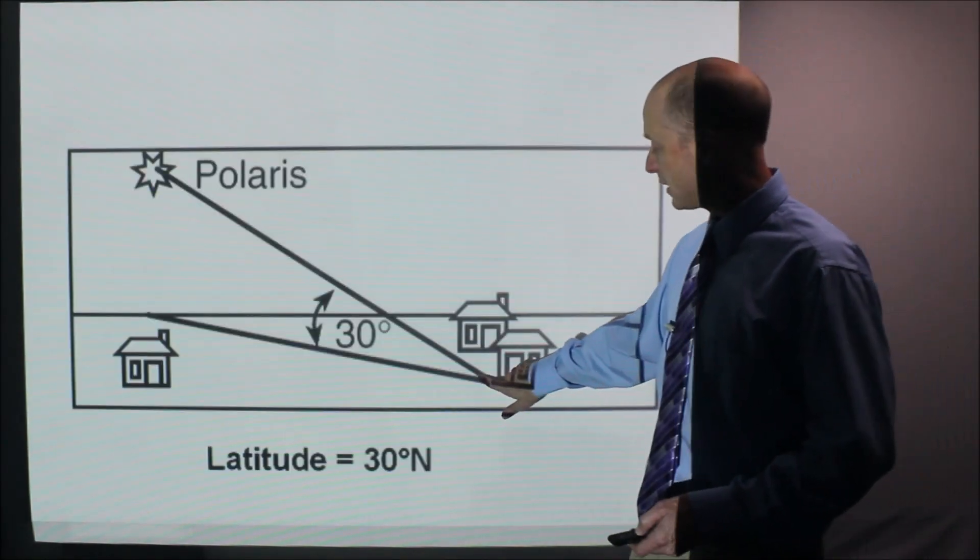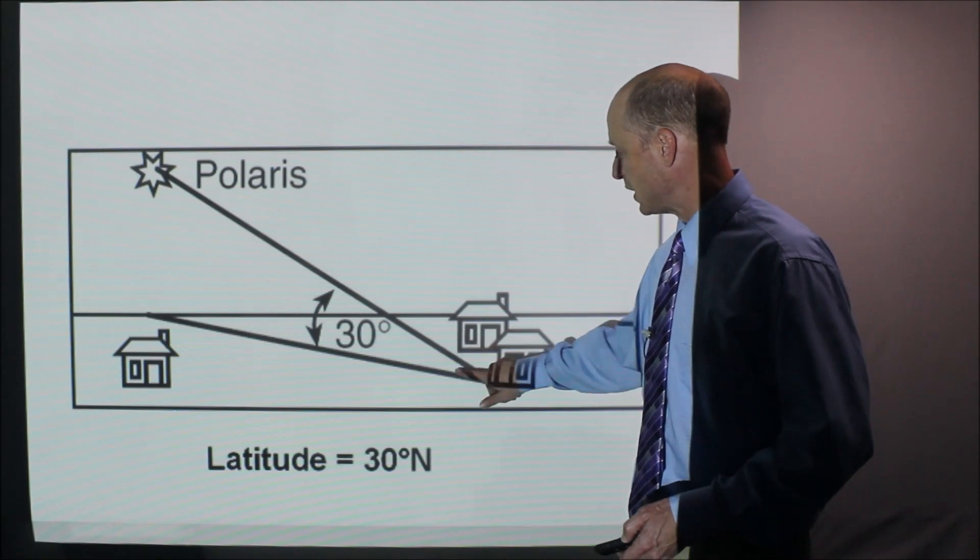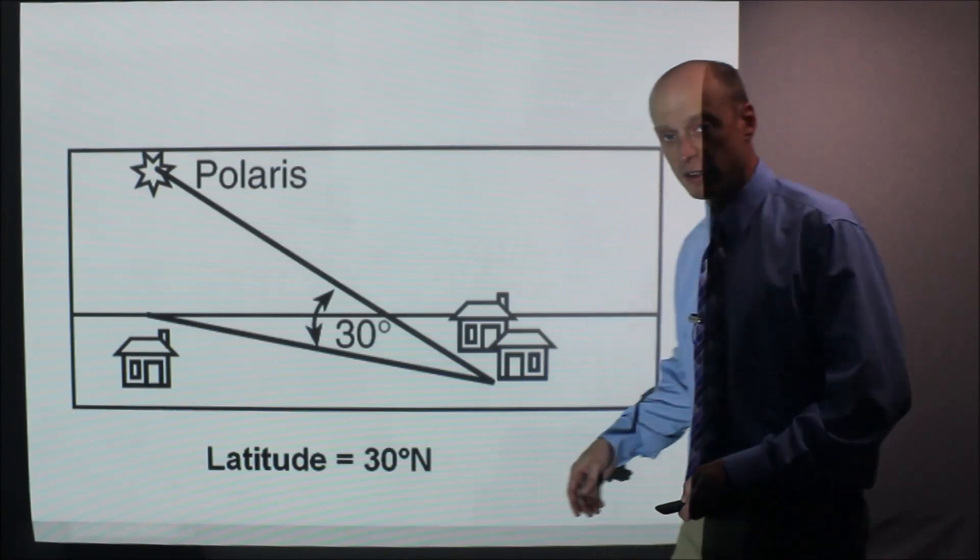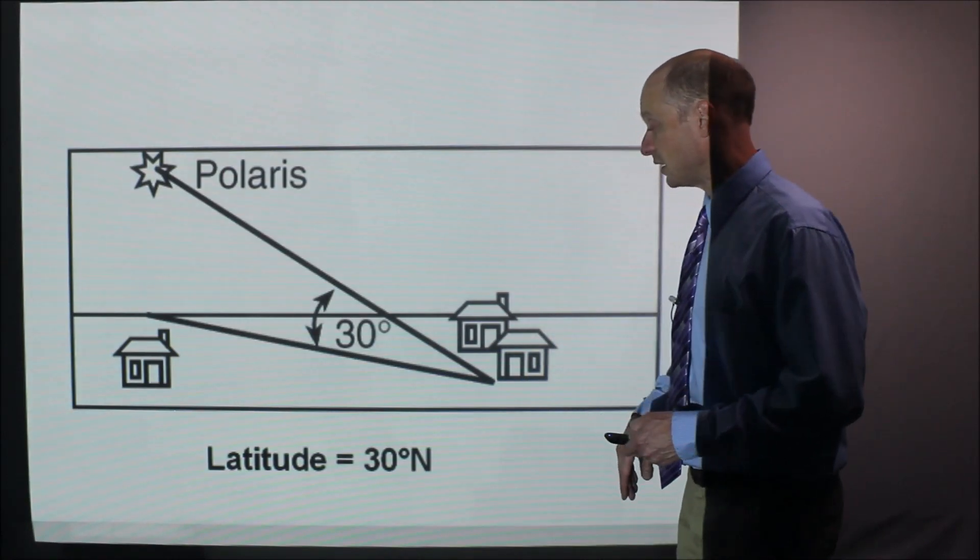Look at this, the angle of this location here, 30 degrees above the horizon is Polaris, latitude 30 degrees north. Hopefully you see this pattern because it's something you need to know.